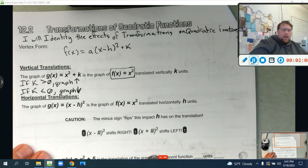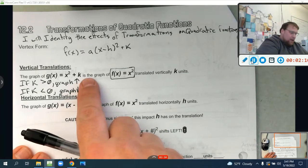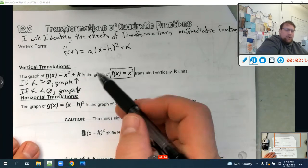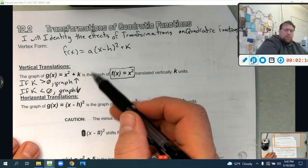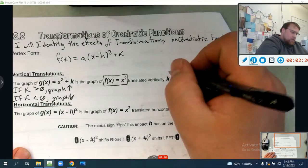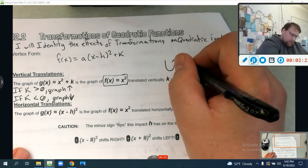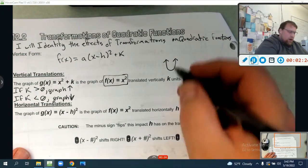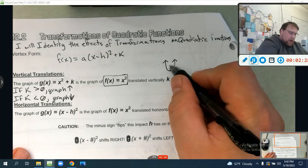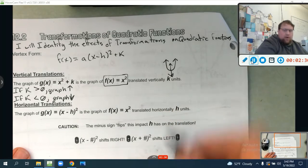So again, adding that k on the outside here is a vertical translation. And it's either going to be positive or negative, positive goes up, negative moves the whole graph down. When I say goes up and goes down, I mean we have this graph f(x) equals x squared, and it's going to either move it up the whole graph or down.